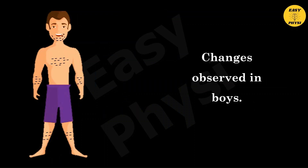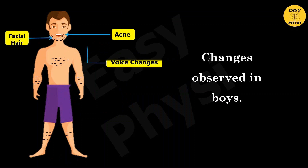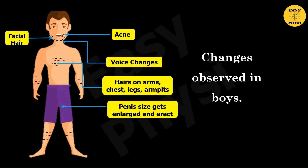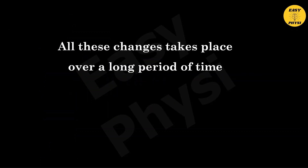Changes observed in boys are: they get acne on their face, they get facial hair, their voice changes, they get hair on arms, chest, legs, and armpits, and their penis size gets enlarged and erect. These changes take place over a long period of time.